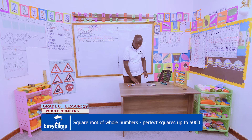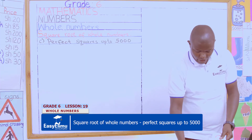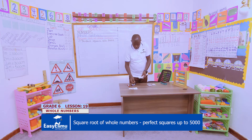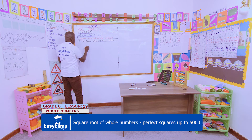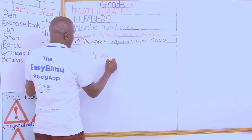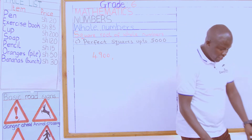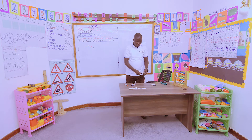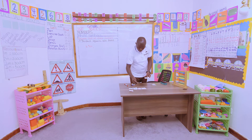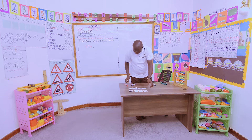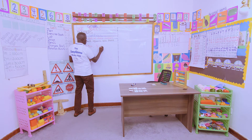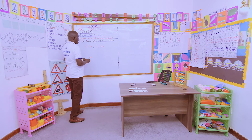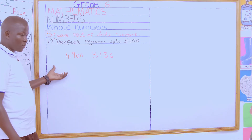We will be reading the number cards loudly. We have four, nine, zero, and zero — when you read the entire number it is 14,900. We can also identify another number card: three, one, three, and six — read as 3,136.